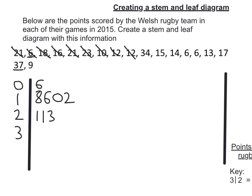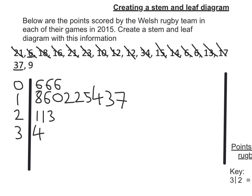12. 34. 15. 14. 6. 6. 13. 17. 37 and 9. Now that I've done it unordered, I can now order it.